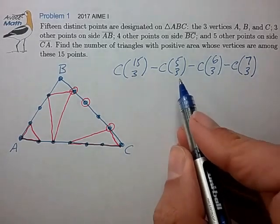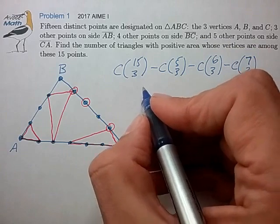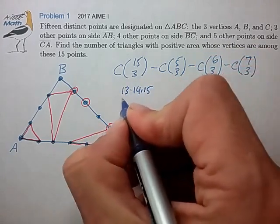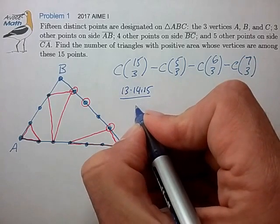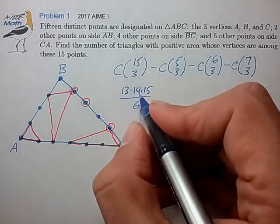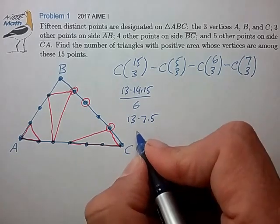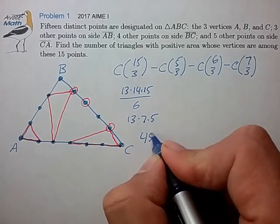So, let's see how we can calculate this now. C(15,3) is 13 times 14 times 15 divided by 3 factorial, that's 6. Cancelling out a little bit here, we have 13 times 7 times 5, that's 455.